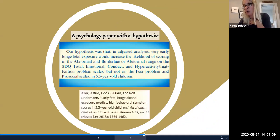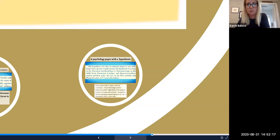We can also look at a hypothesis. So a hypothesis is when you're putting forward a solution. So in this case, Alvik and Allen and Lindeman propose an increased likelihood of scoring in the abnormal and borderline range, the total emotional SDQ, right? So basically what they're saying is that, hey, we did some data aggregation and this is what we found. And this is the solution to the problem that we're proposing.